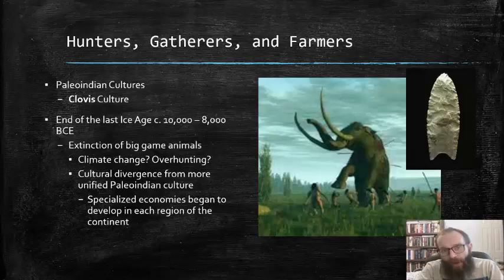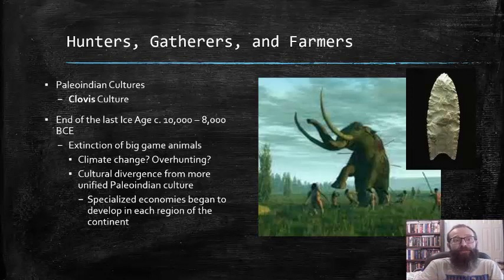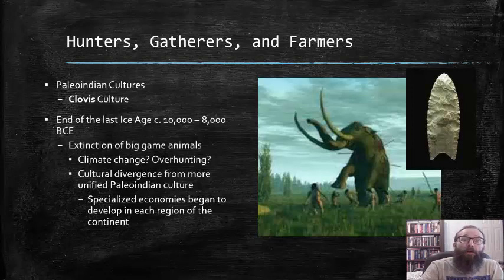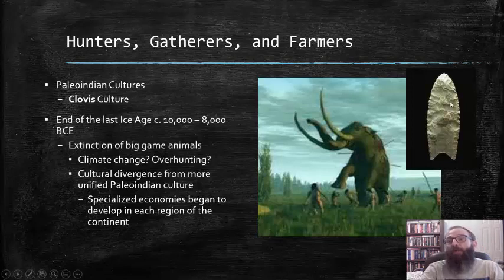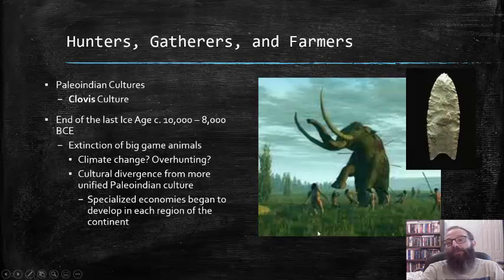The most prominent of these early Paleo-Indian cultures, prior to the end of the last ice age, is known as the Clovis culture, which was widespread across much of North America and is identified by distinctive spear points that were used to hunt big game animals such as the mammoth.